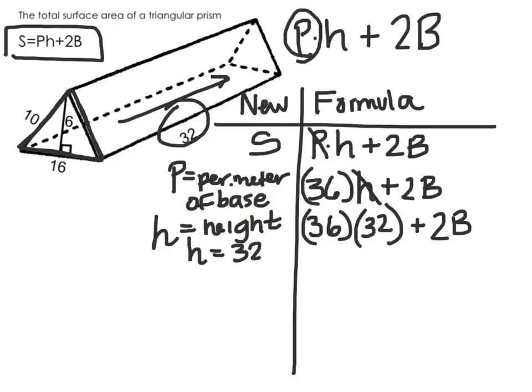Now my last variable that I need to solve for is capital B. Capital B I already know is the area of the base. From the name, I see it's a triangular prism, so my base is a triangle.